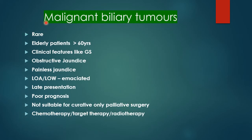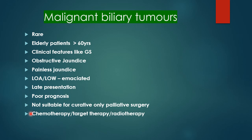All three malignant tumors share common features: they are rare, occur in elderly patients above 60 years, have clinical features similar to chronic gallstone disease, and all present with deep obstructive jaundice which is often painless, associated with marked weight loss and anorexia, with emaciated patients. These tumors generally present very late — already advanced by the time of detection. Prognosis is very poor; most do not survive more than a year. Only palliative surgery or treatment is possible in the form of chemotherapy, targeted therapy, or radiotherapy.